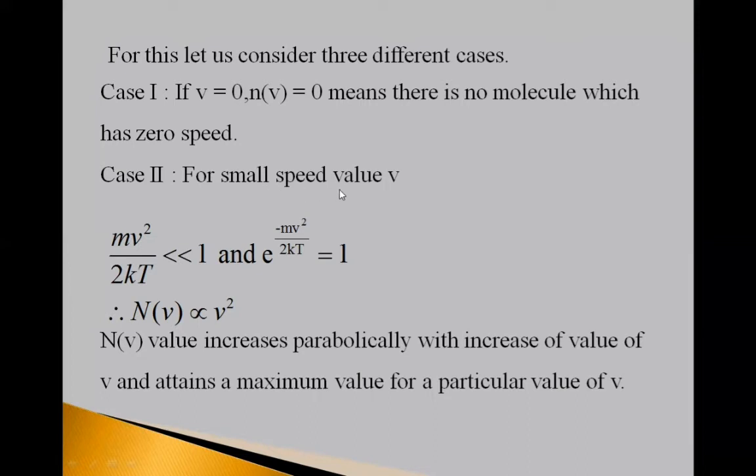Now, case second for small speed value v, mv square upon 2kT is very very less than 1 and e raised to minus mv square upon 2kT is equal to 1. So, N(v) proportional to v square means this N(v) value increases parabolically like this with increase of value v and attains maximum value for particular value of v. So, this is shown graphically.